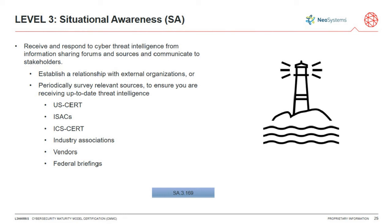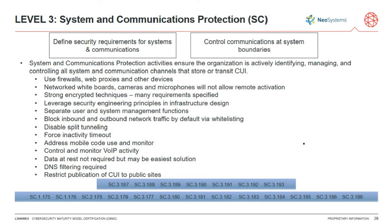Situational awareness is very straightforward — sign up for threat intelligence from US-CERT and similar organizations. CISA just published an important advisory about DNS. If you haven't applied the Microsoft DNS patch, you were supposed to do it by last Friday. You need to go in and apply the July 2020 security update from Microsoft. Those kinds of briefings are required and you should be receiving them.